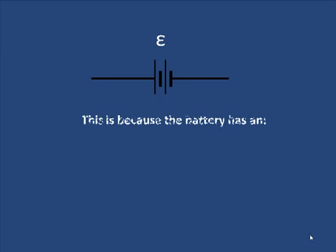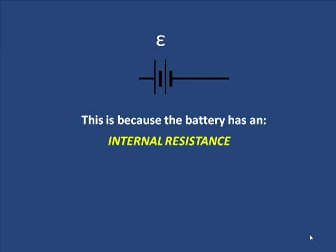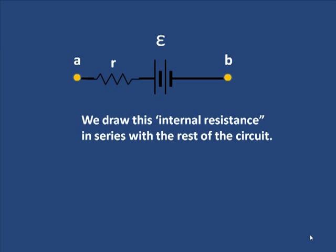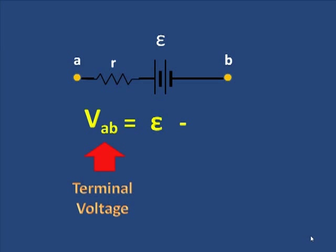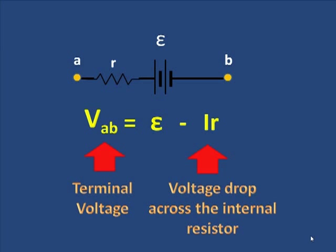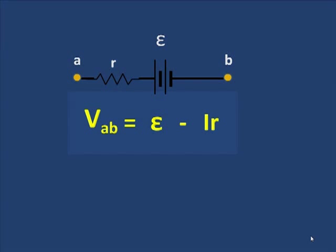The reason for the dip is that the battery itself has an internal resistance — there's resistance within the battery. With terminals A and B, we draw the internal resistance in series with the rest of the circuit, adding a small resistor r. The terminal voltage VAB equals E, the EMF, minus I times r, which is the voltage drop across the internal resistor. You need to know that diagram and this formula.